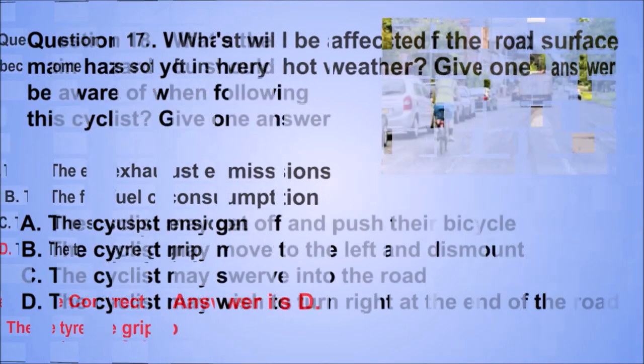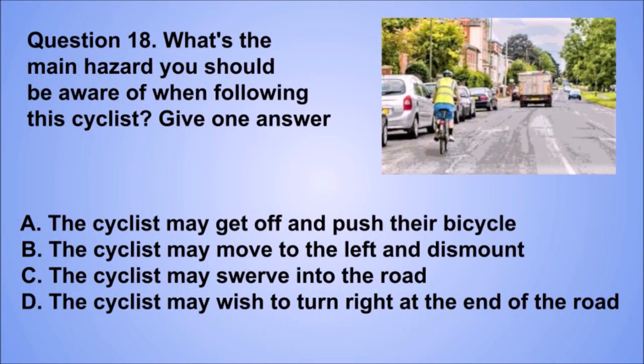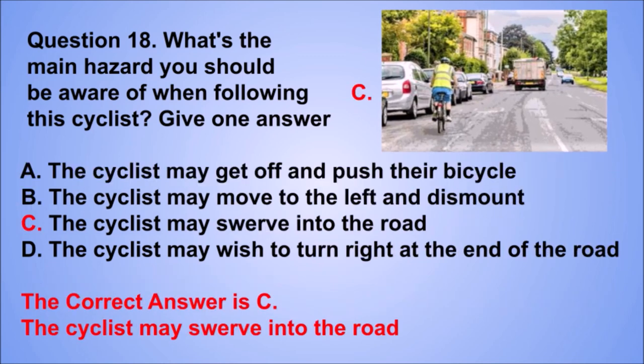Question 18. What's the main hazard you should be aware of when following this cyclist? Give one answer. A: The cyclist may get off and push their bicycle. B: The cyclist may move to the left and dismount. C: The cyclist may swerve into the road. D: The cyclist may wish to turn right at the end of the road. The correct answer is C: The cyclist may swerve into the road.